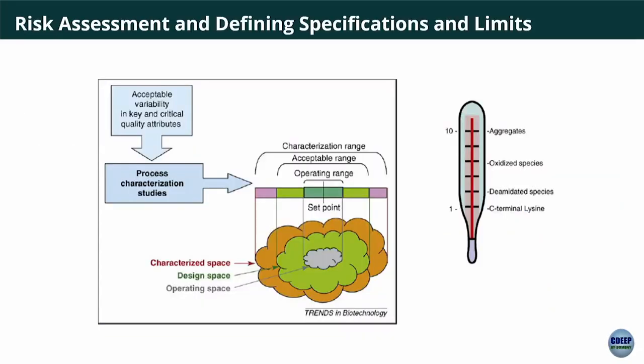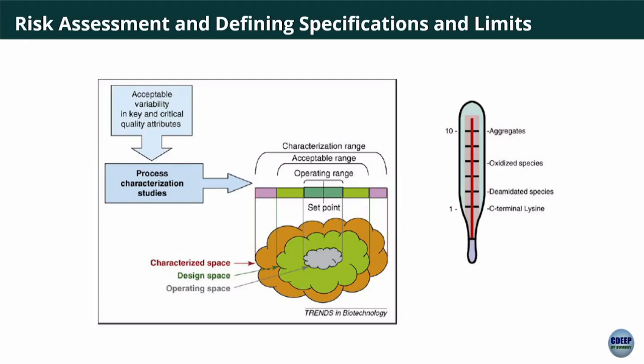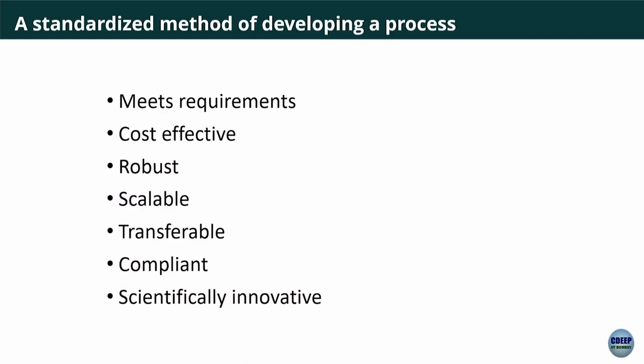Quality by Design means ensuring quality by planning everything systematically. You have your design space — what the drug's parameters will be — your operating space, where you give yourself a little leeway before failure, and your characterizing space. When developing a process for a particular molecule, it should meet requirements, be cost-effective, robust, scalable, transferable, and compliant. For a novel molecule it should also be innovative so you can generate intellectual property.